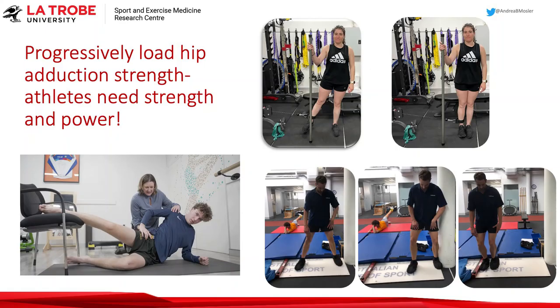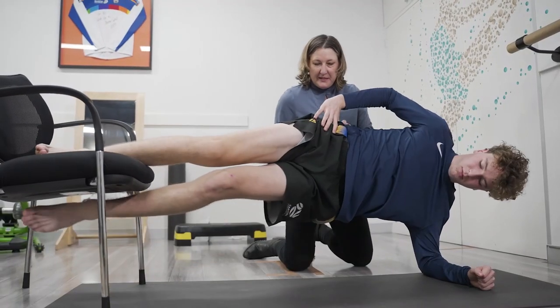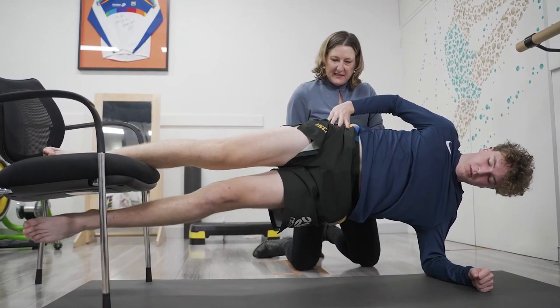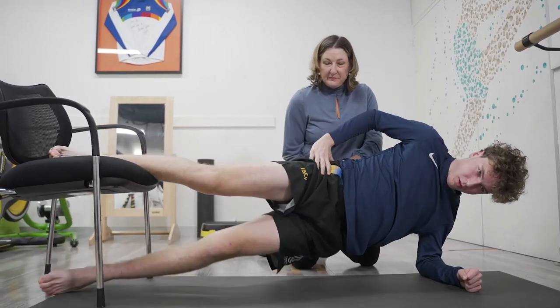Then quickly move them beyond the cable into something more functional like the Copenhagen adduction exercise. It's really important to build load because the loads athletes are going back to with their sport — we have to try to replicate that in our rehabilitation program. The Copenhagen adduction exercise increases trunk endurance, also increases abduction strength, as well as eccentric adduction strength — a fantastic exercise. Often athletes will struggle with the long lever, so it's really important to start with the bent knee, and particularly anyone that has had any kind of medial knee pain, it's important to have that knee supported. You can also add weight to that lower leg to increase the load for the adduction exercise.